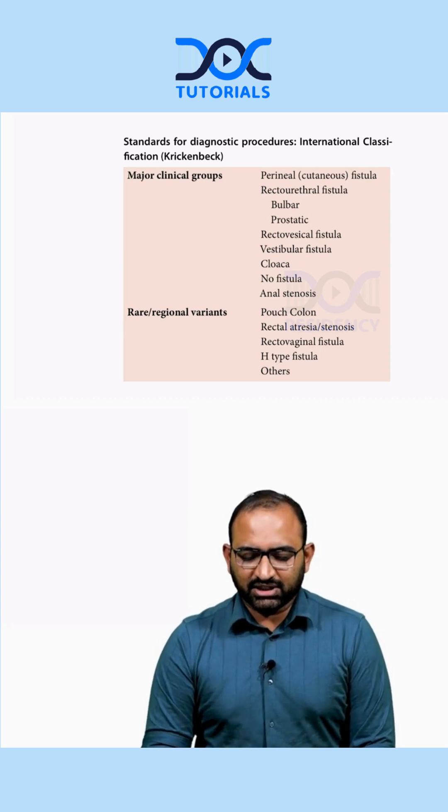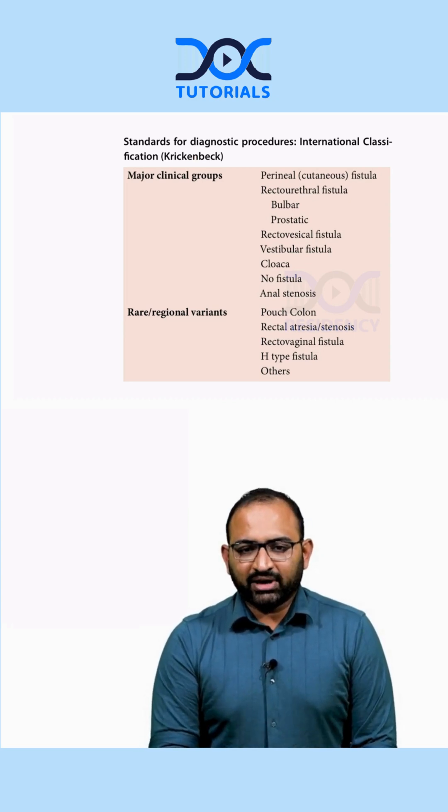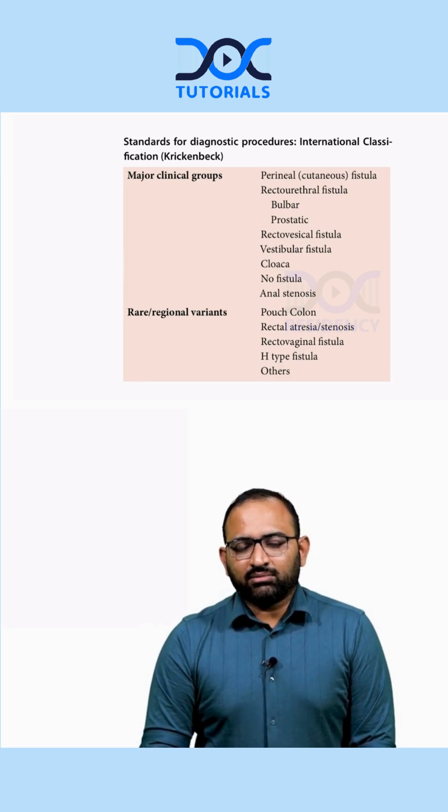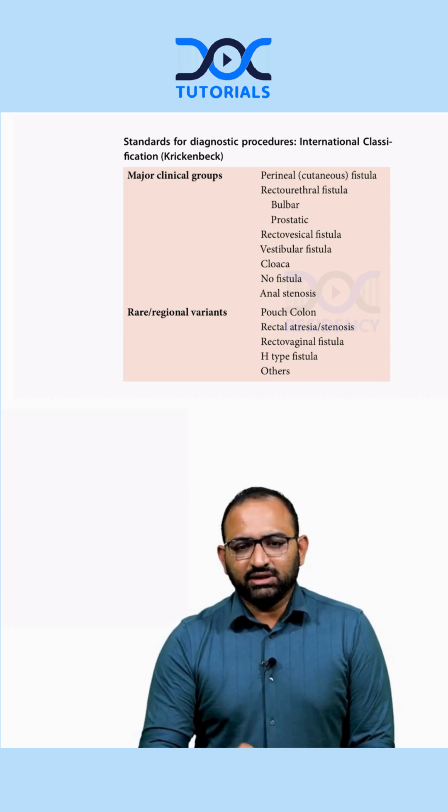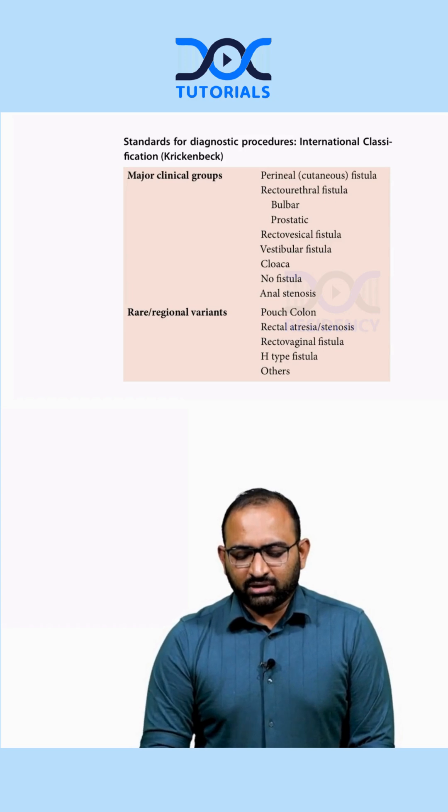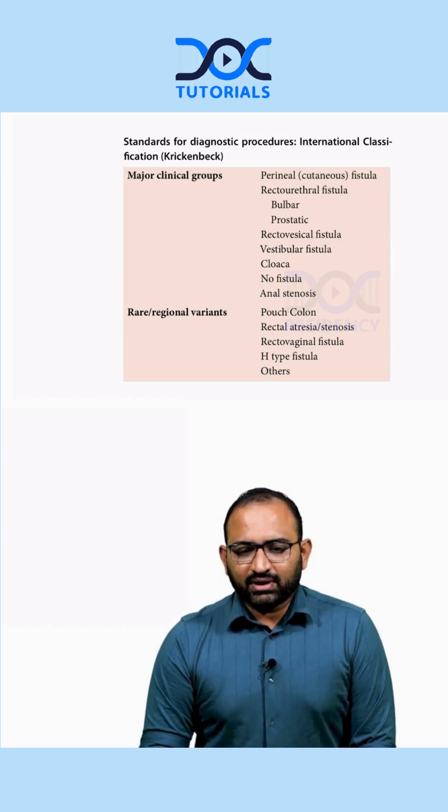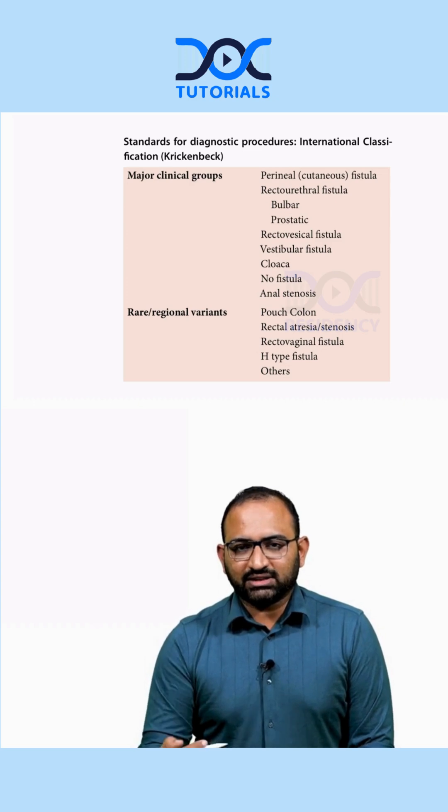This is the latest classification based on Krickenbeck, called the Krickenbeck International Classification. It broadly classifies into major and minor regional variants. The most common anomalies are listed as major, and the regional or rare variants are listed separately.